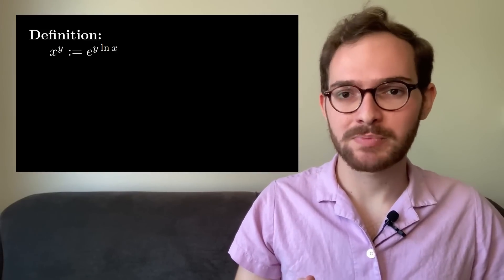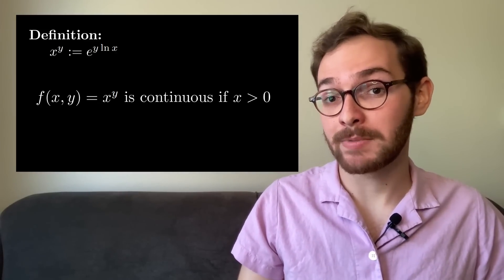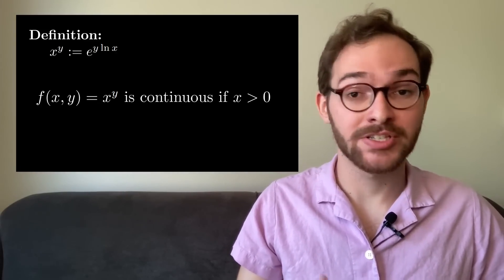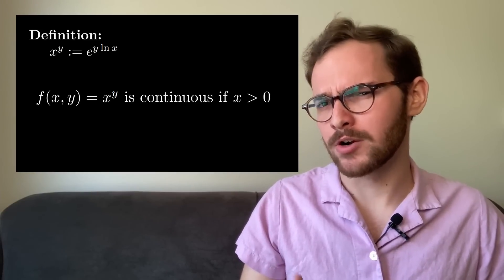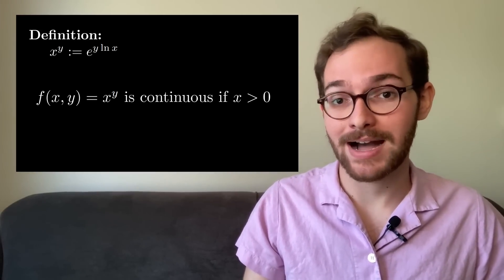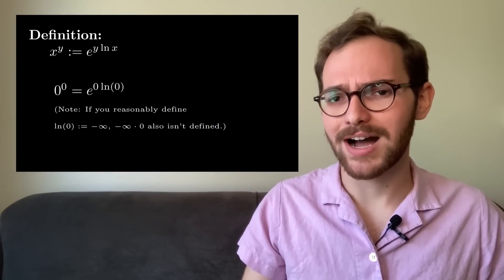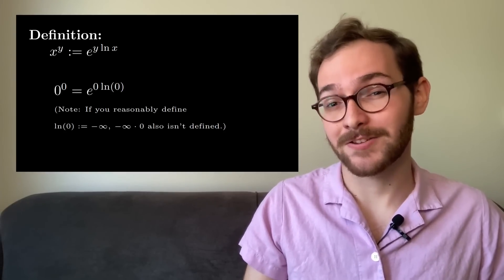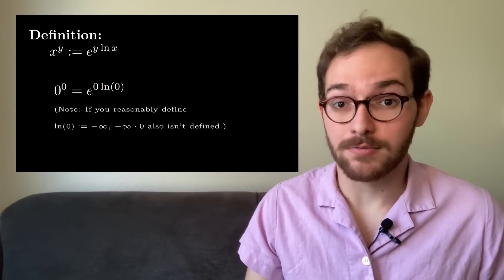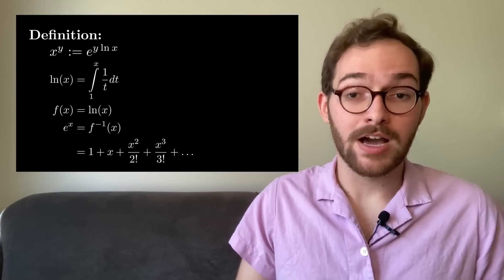From these definitions, you can much more easily show that f of x comma y equals x to the y is continuous when x is greater than zero, which is why our earlier approach of approximating pi with rational numbers worked out. And it's also why 0 to the 0 isn't defined—ln of 0 doesn't exist.